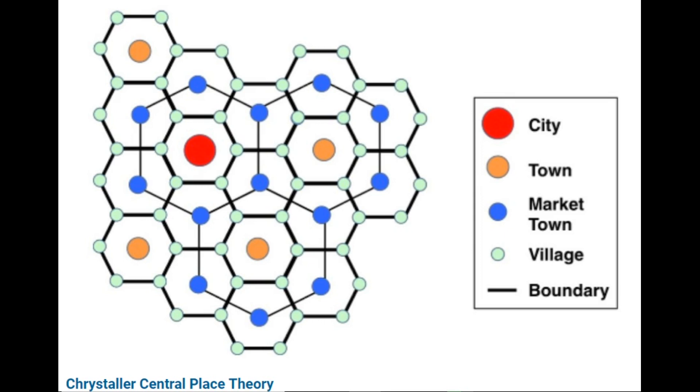Within the central place system, there are five sizes of communities. A hamlet is the smallest rural community, which is too small to be considered a village. The rank order of central places is: hamlet, then village, then town, then city, and then regional capital.